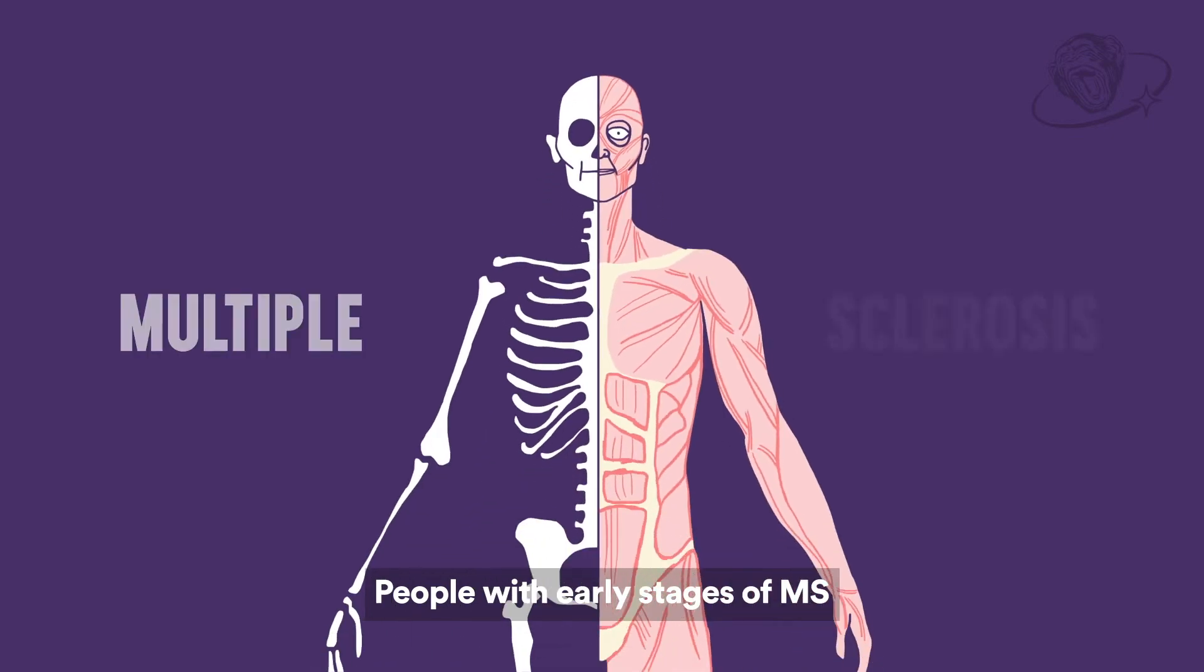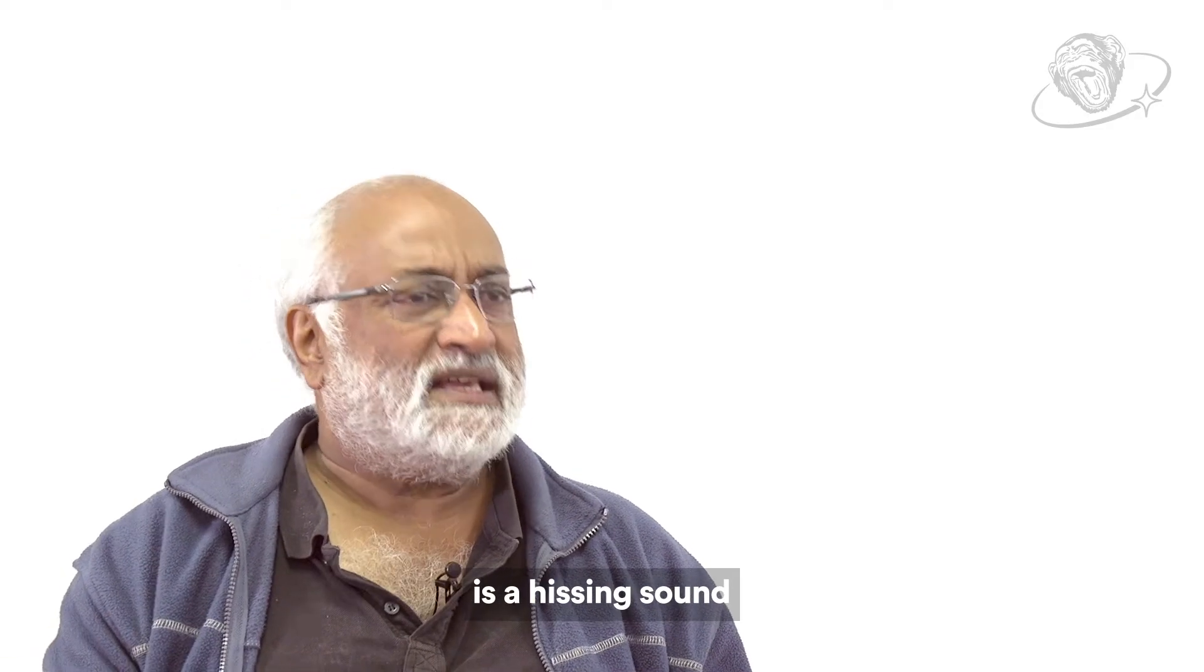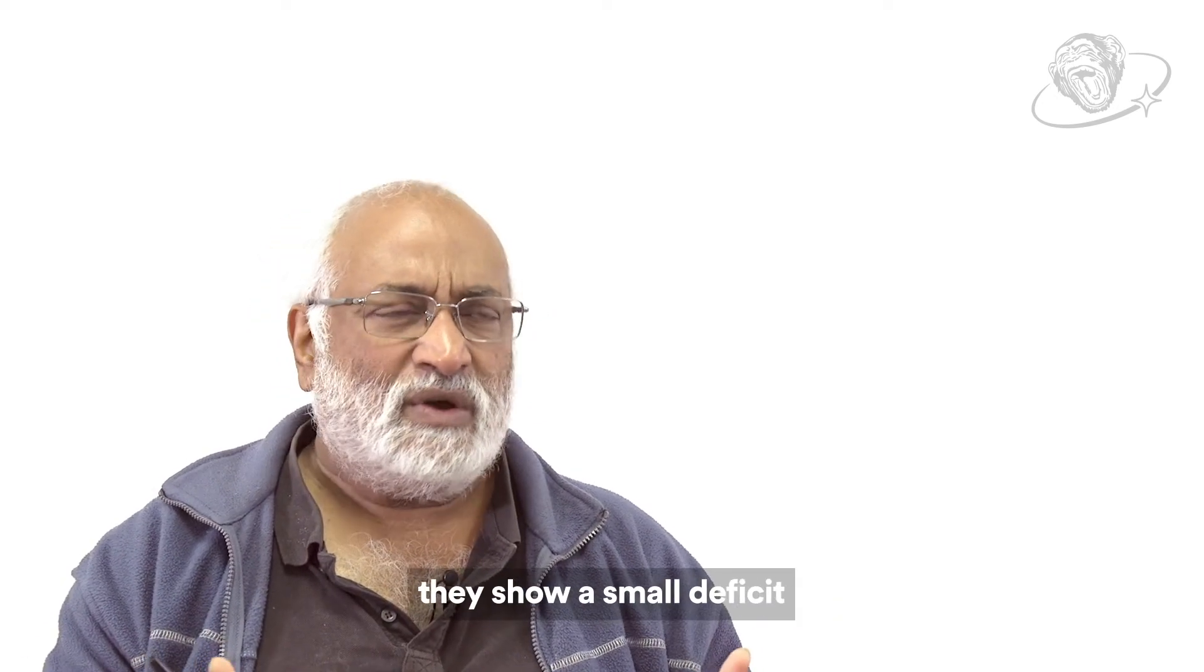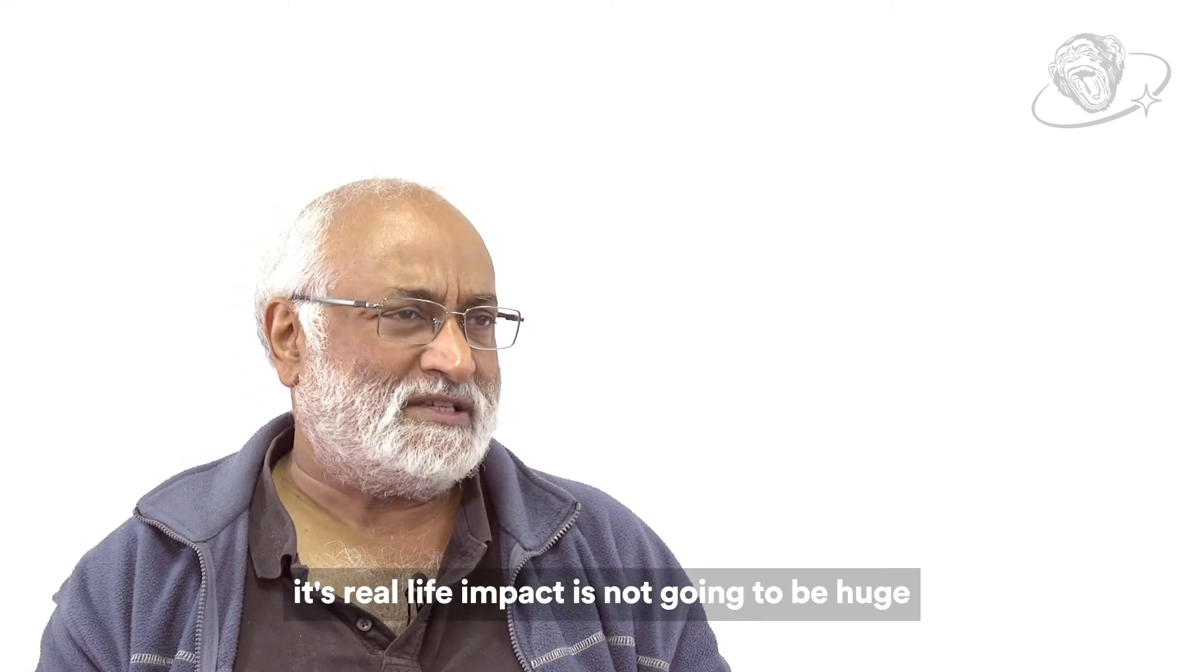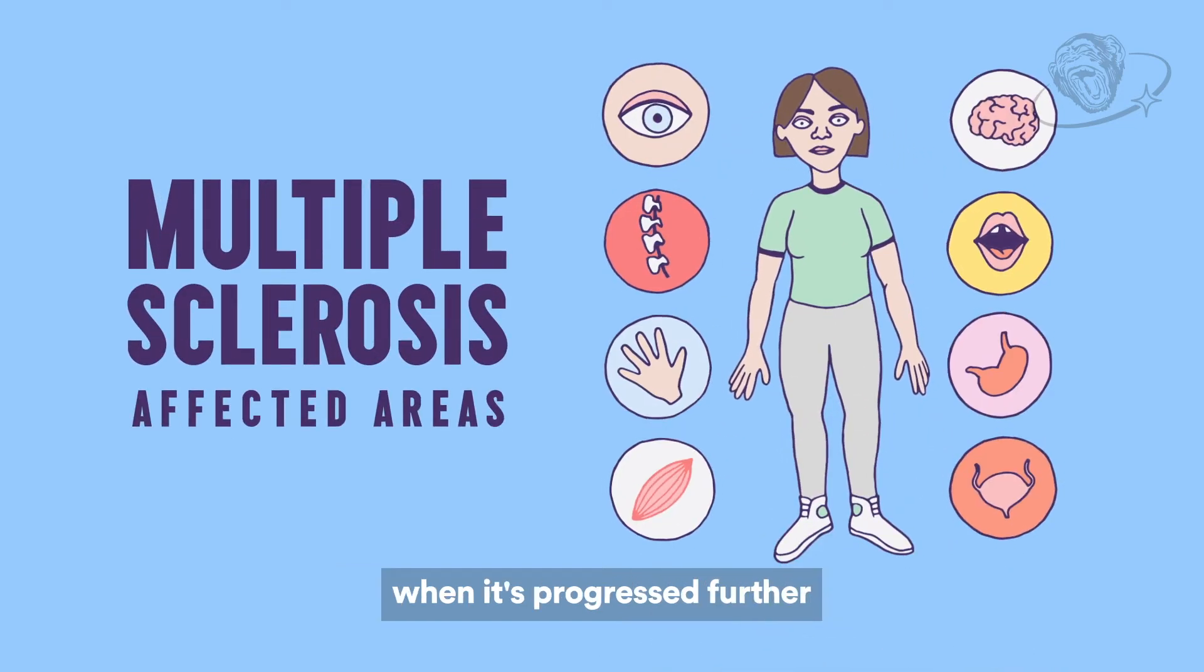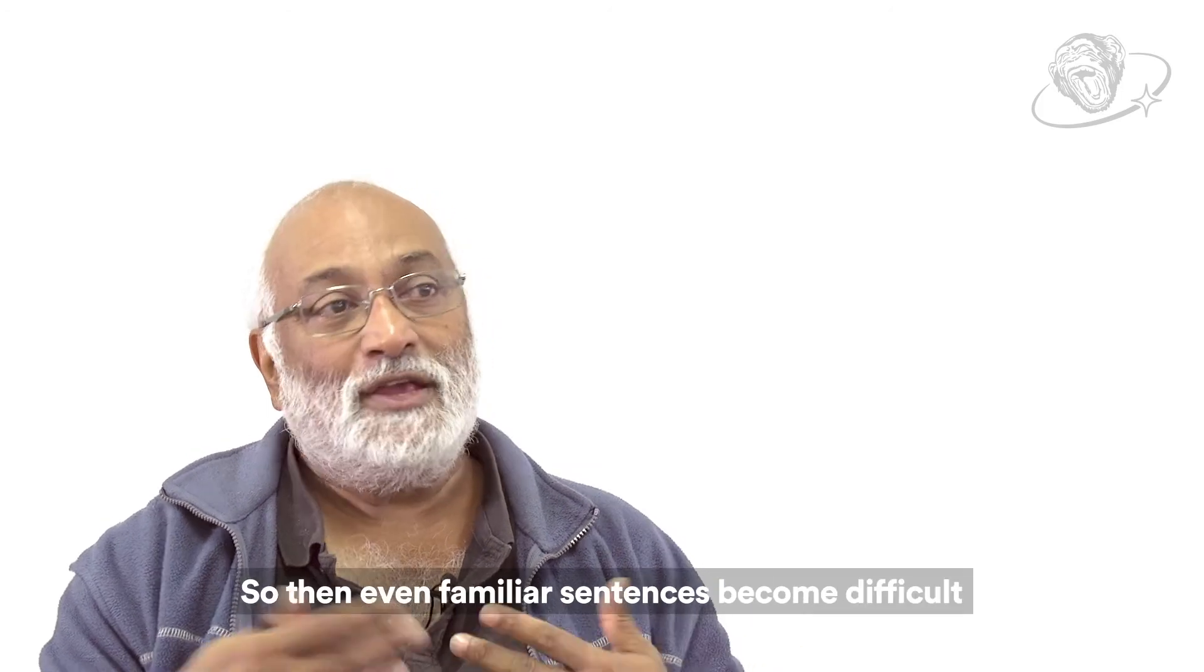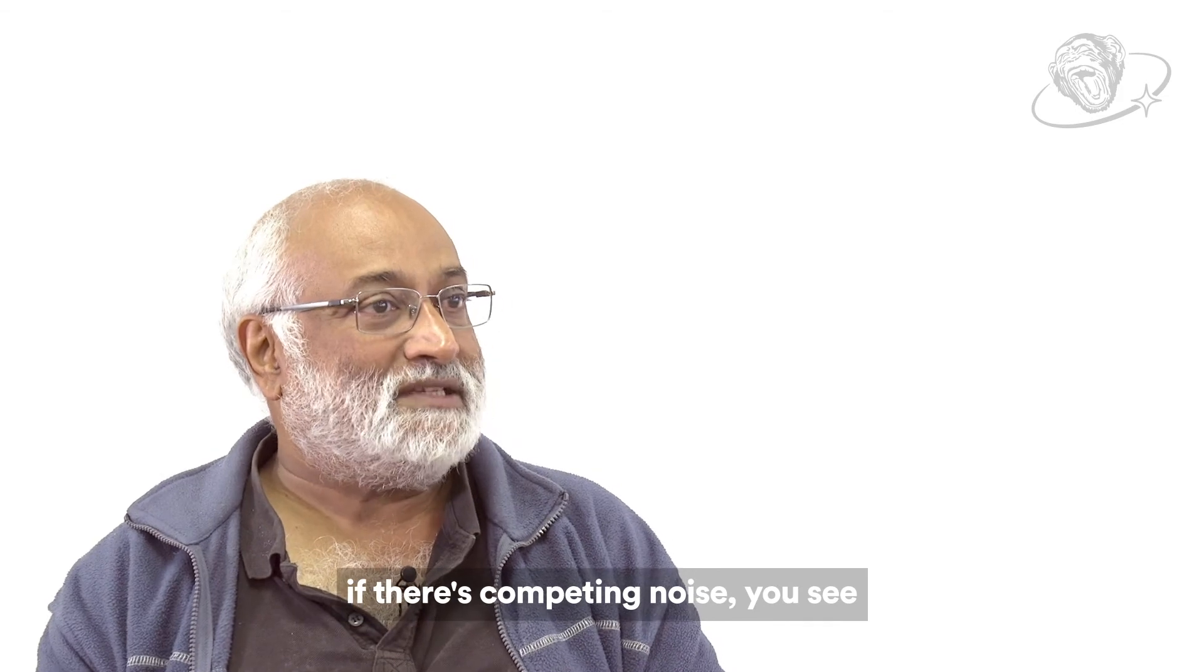People with early stages of MS show no deficits when the background noise is a hissing sound. When the background noise is people talking in a more challenging condition, they show a small deficit. It's significant, but its real-life impact is not going to be huge. If you look at the disease condition when it's progressed further, even the words in context, they show massive deficits. So then, even familiar sentences become difficult if there's competing noise.